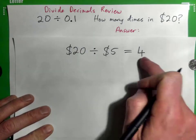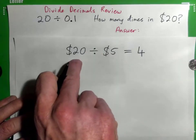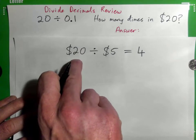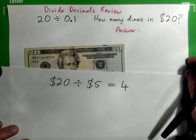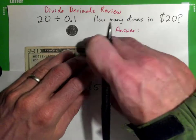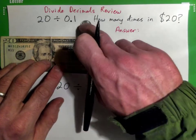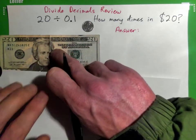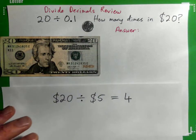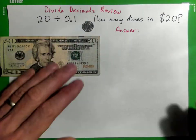So when we're saying 20 divided by 0.1, we're saying how many of these dimes are contained in this $20 bill. How many of these guys inside of that guy? Make sense? So that's what division actually means - how many of these are contained in that.